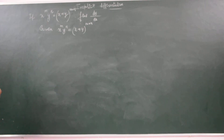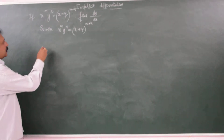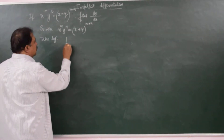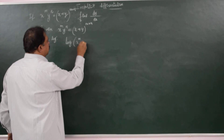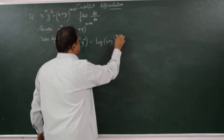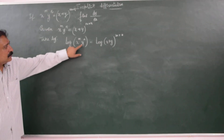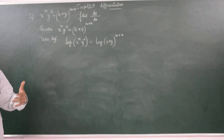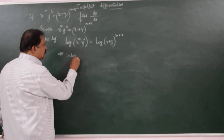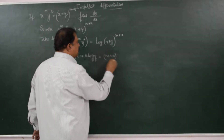Now since we have powers on both sides, let us take logarithm. Taking log on both sides: log of x to the power of m into y to the power of n is equal to log of x plus y to the power of m plus n. Using the laws of logarithm — both the power rule and product rule — this gives m log x plus n log y is equal to m plus n into log of x plus y.